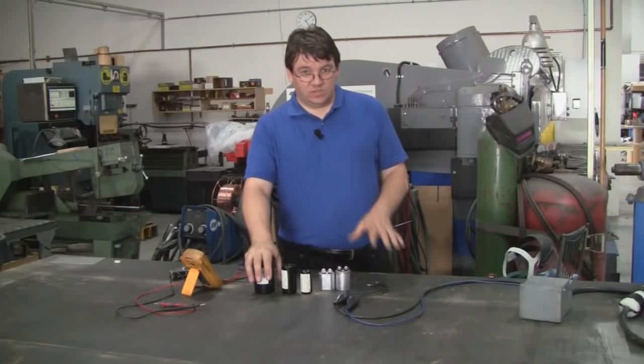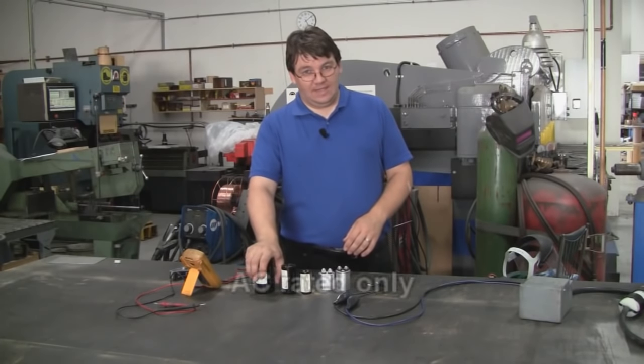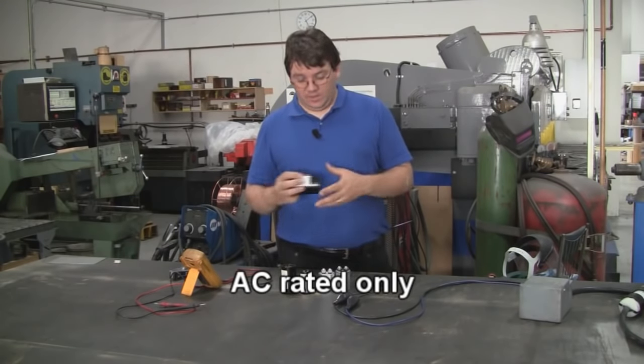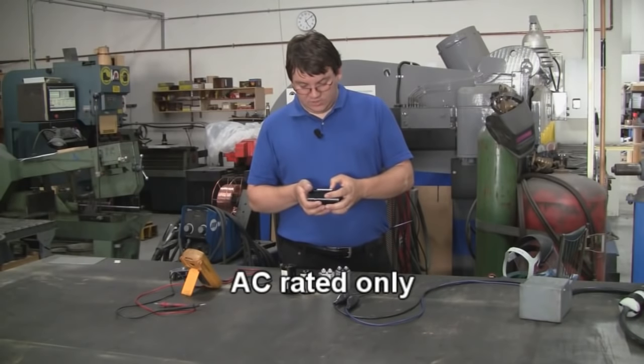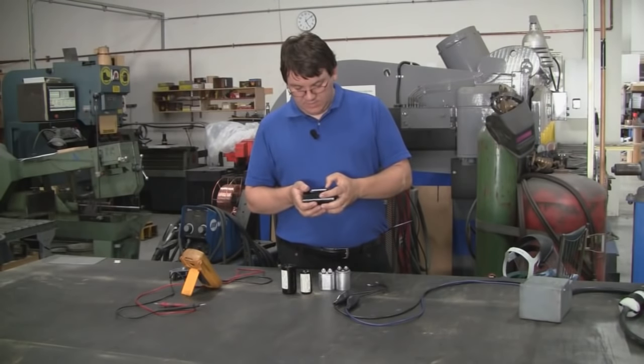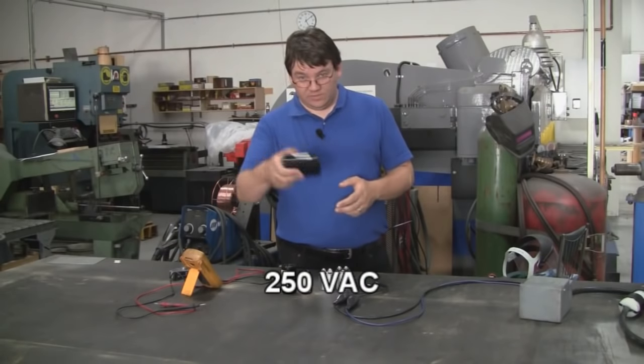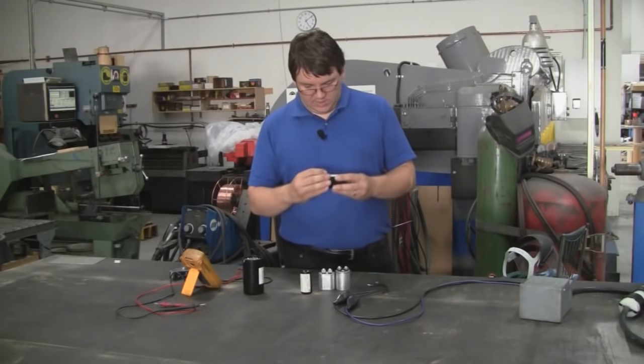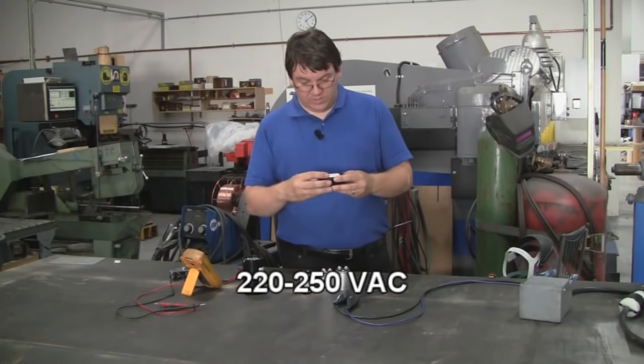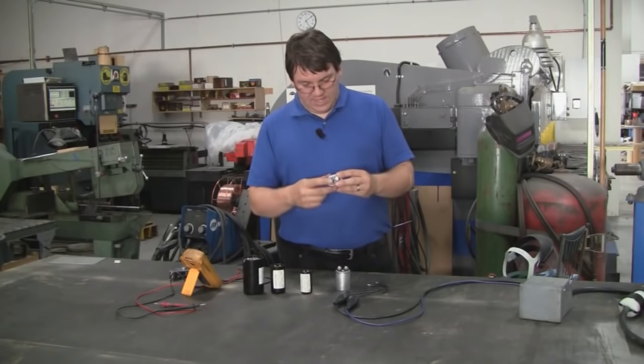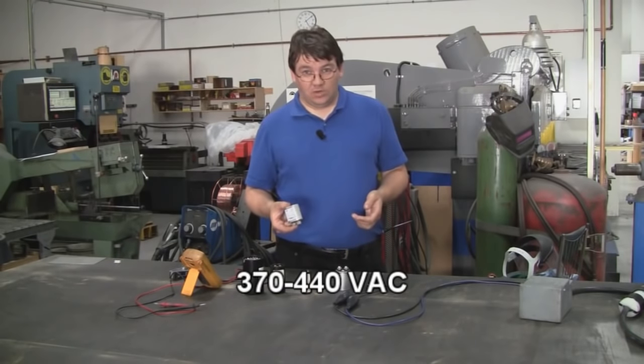Now these capacitors, motor start and run capacitors are AC rated capacitors and when you look on the label of these you'll see the voltage rating here. So for example this one says here 250 volts AC, the air one here 220 to 250 volts. And on the run caps here I've got 370 to 440.